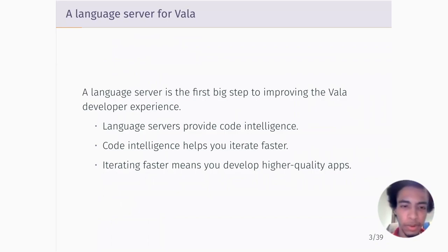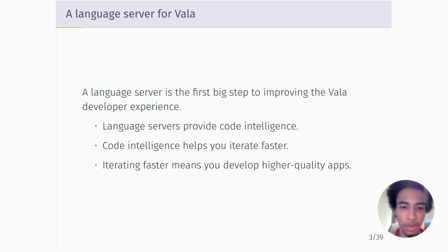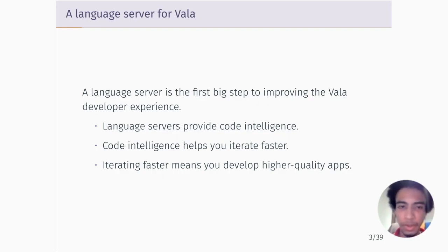When we think about Vala, when you think about any language as an ecosystem, a language has tools. When we start off without any tools for a language, one of the first big steps we can take to improving the developer experience is to have a language server. Language servers are very important because they allow developers to look at how their code is changing in real time and to analyze it in real time. Doing this allows you to iterate much faster than you normally would, and when you iterate faster, you develop higher quality apps.